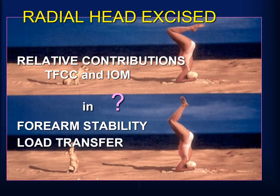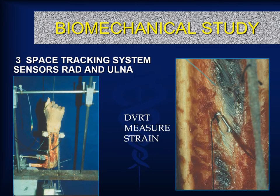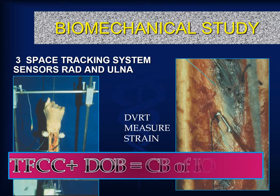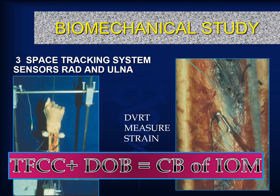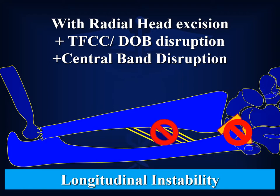In early studies of axial instability, the key question was whether the central band or the triangular fibrocartilage complex was more central to restoring stability. Jim Skain, in a biomechanical analysis using three-space tracking systems and DVRT strain gauges, was able to prove that both the triangular fibrocartilage complex and the central band were equally critical to maintaining longitudinal stability once the radial head had been resected. With radial head excision, compromise of the triangular fibrocartilage and distal oblique bundle together with compromise of the central band results in longitudinal instability.